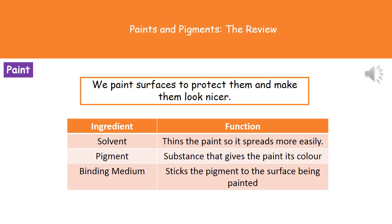Paint is made up of three key ingredients, and we need to remember the names and their functions. We've got the solvent, which is used to thin the paint so it spreads more easily — it's far easier to paint with a relatively thin liquid rather than a solid lump, like a giant crayon. The pigment is the substance that gives the paint its colour, and the binding medium is what sticks the pigment to the surface being painted.